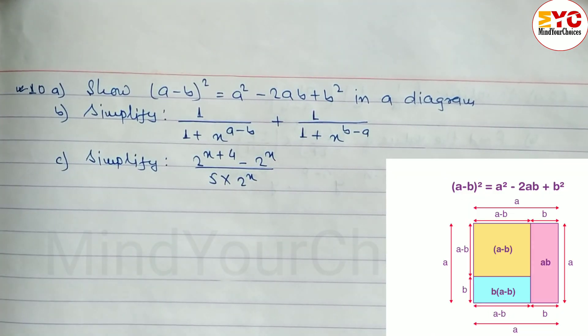So the diagram is here. Copy this diagram from the board. This represents A square minus 2AB plus B whole square.